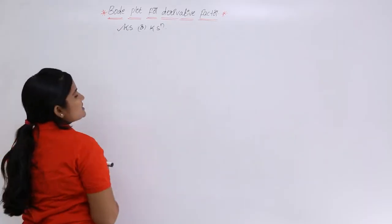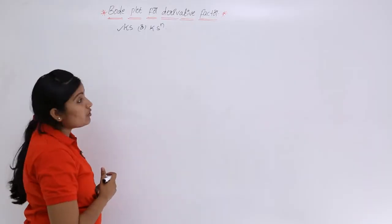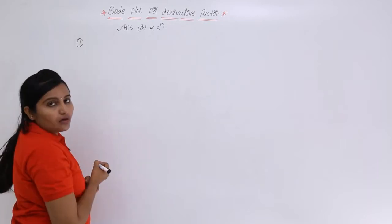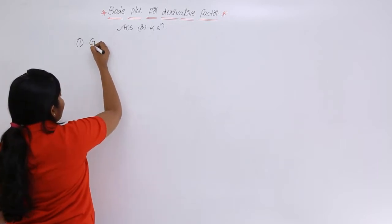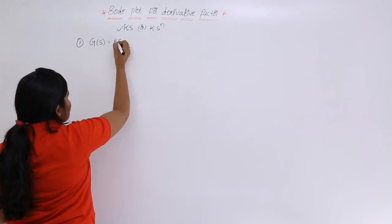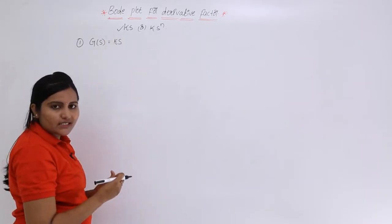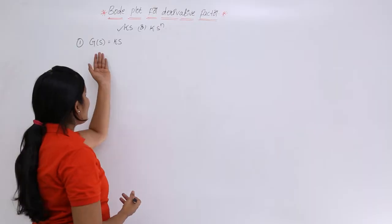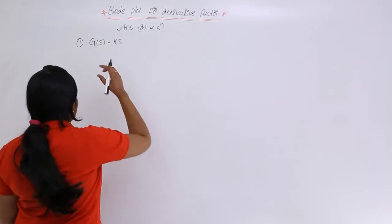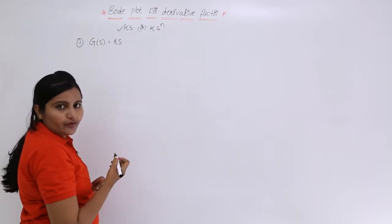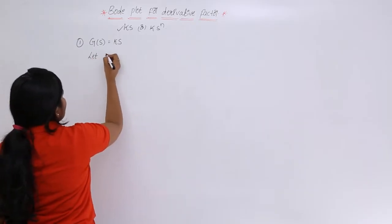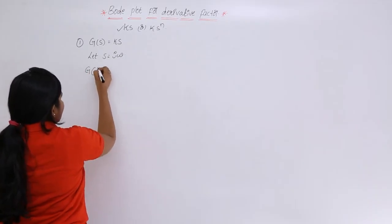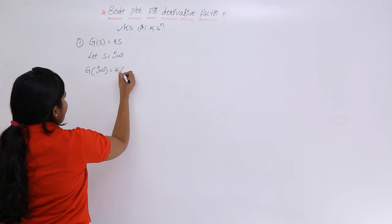First, I am going to consider Ks, and after that I will consider the Bode plot for Ks power n also. Consider the open loop transfer function G(s) = Ks. We already discussed the procedure to draw a Bode plot. The first step is to convert into frequency domain. To convert from s domain into frequency domain, substitute s = jω, giving G(jω) = K · jω.